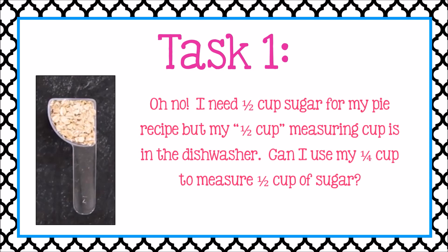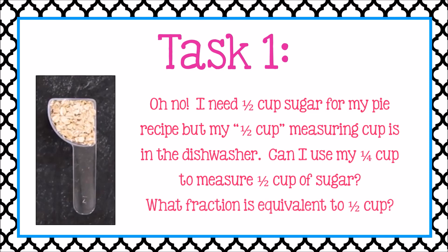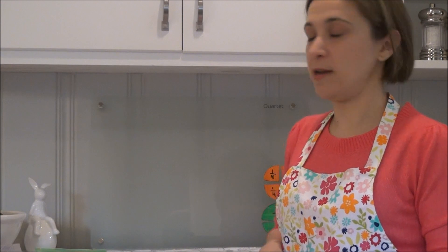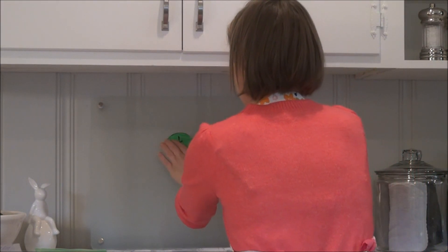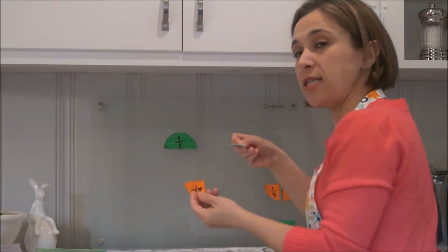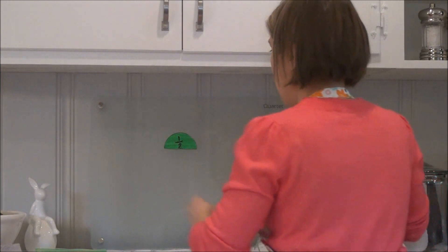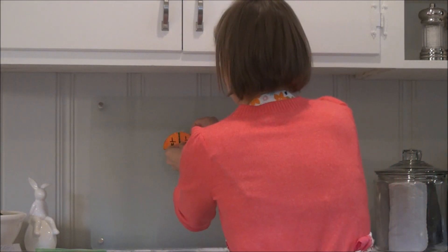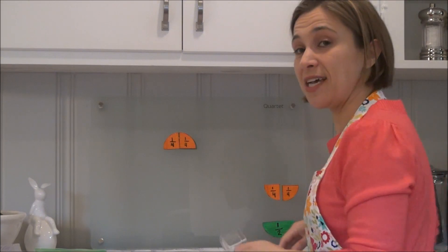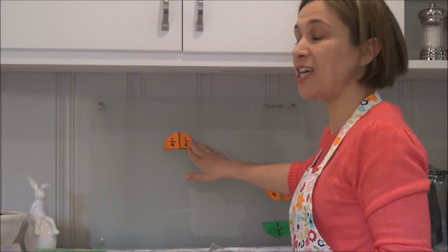Let's take a look at a problem. The other day I was baking an apple pie and I needed to measure out one half cup of sugar, but my half cup measuring cup was in the dishwasher. Is it possible to use my fourth cup to measure out one half cup of sugar? Use your circle models to solve this problem, and if it is possible, what fraction did you find is equivalent or equal to that one half cup? So let's take a look at my circle models. I can measure out one fourth cup and another fourth cup — and indeed yes, it's possible. I measured out a total of one half cup.